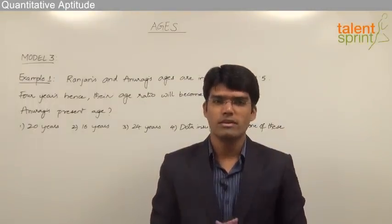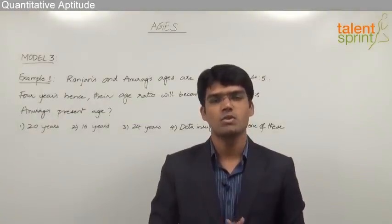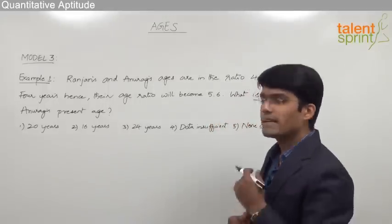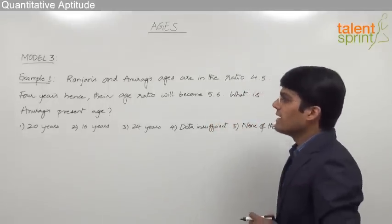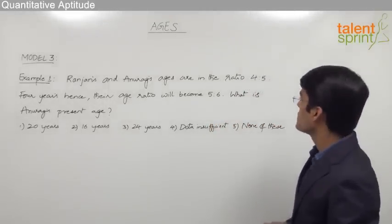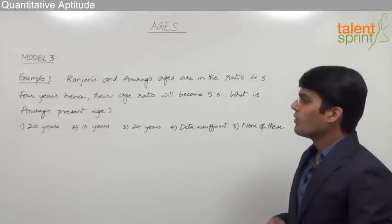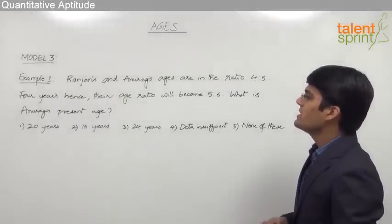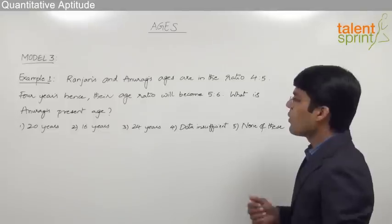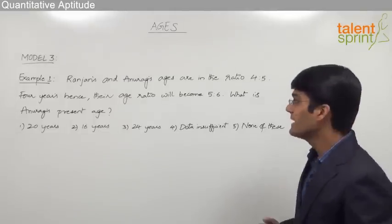Let us now take the third model from ages where the question is based on the ratio of the ages of two persons. Let us look at the example: Ranjan's and Anurag's ages are in the ratio 4 is to 5. Four years hence their age ratio will become 5 is to 6. What is Anurag's present age?